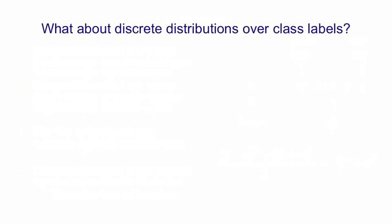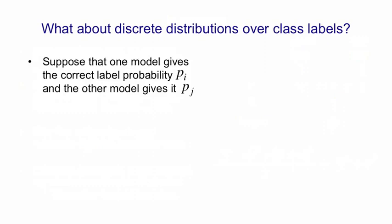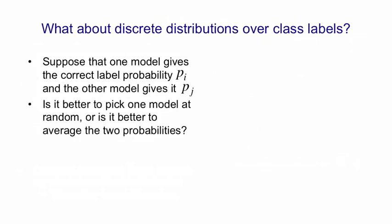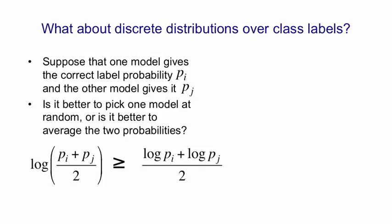The same thing applies to the discrete distributions we have over class label probabilities. Suppose that we have two models, and one gives the correct label a probability of PI, and the other gives the correct label a probability of PJ. Is it better to pick one model at random, or is it better to average those two probabilities and predict the average of PI and PJ? Well, if our error measure is the log probability of getting the right answer, then the log of the average of PI and PJ is going to be a better bet than the log of PI plus the log of PJ averaged. That's most easily seen in a diagram because of the shape of the log function.